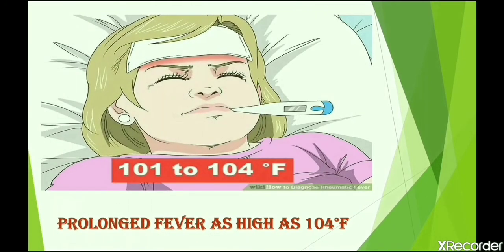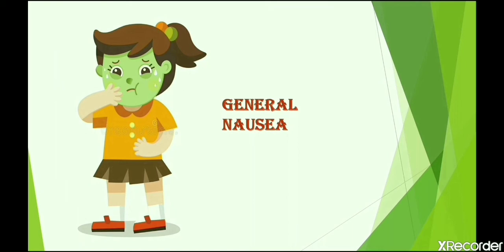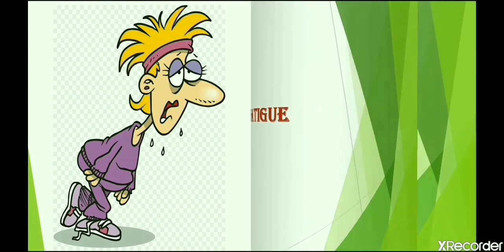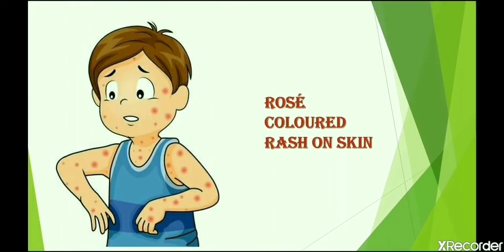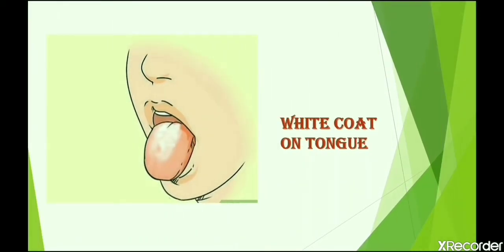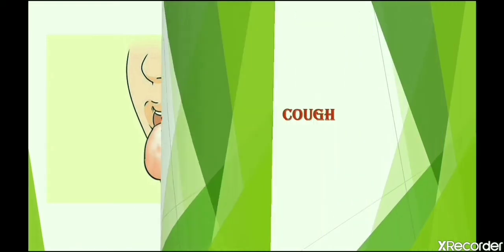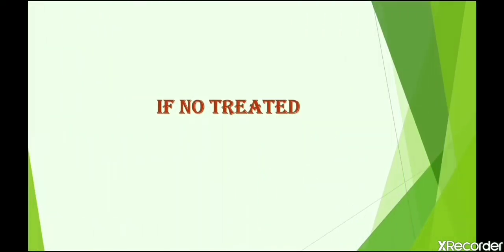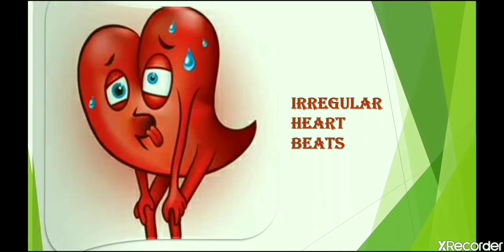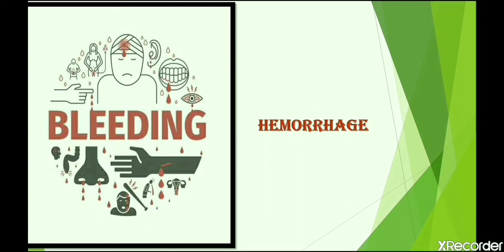Signs and Symptoms: Prolonged fever as high as 104 degrees Fahrenheit. General nausea, fatigue, headache, abdominal pain, constipation or diarrhea, rose-colored rash on skin, white coat on tongue, cough, and anorexia — that is loss of appetite. If not treated, it leads to breathlessness, irregular heartbeats, and in some cases hemorrhage.